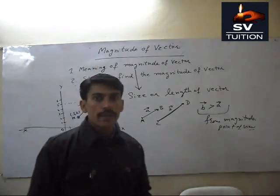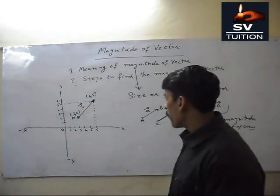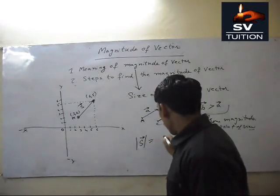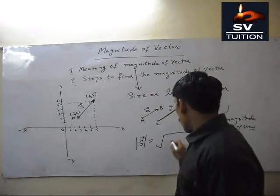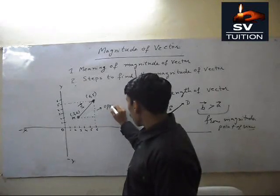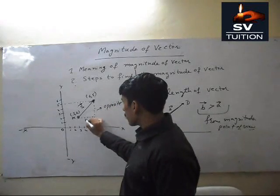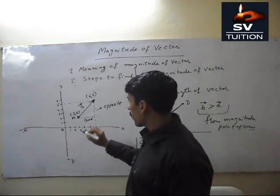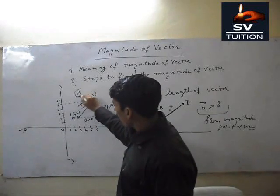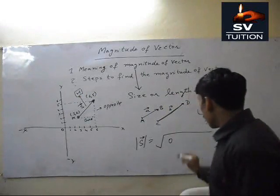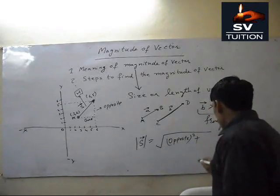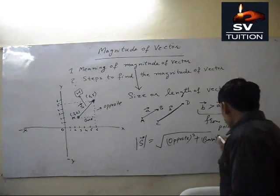We can calculate its size with a simple formula. This is opposite and this is base. We are calculating this vector just like a hypotenuse. Opposite power 2 plus base power 2.